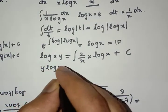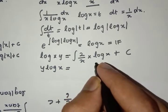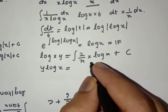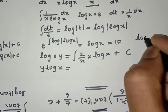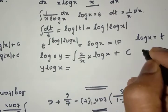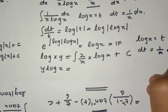y log x. Here also we'll consider log x is equal to t, so here dt is equal to 1 by x dx.